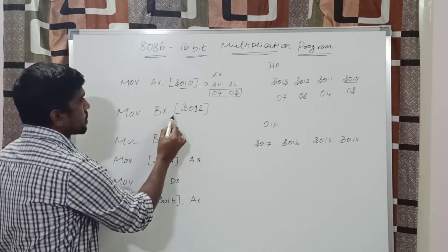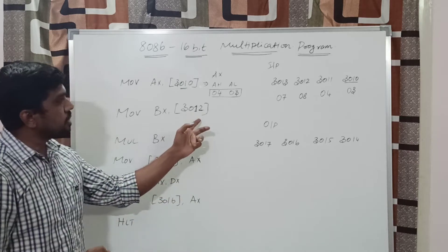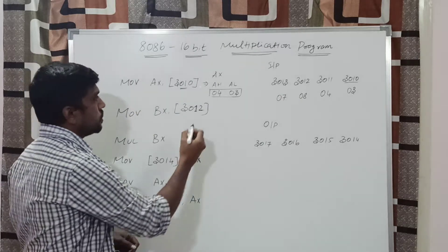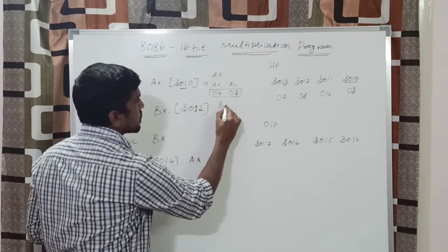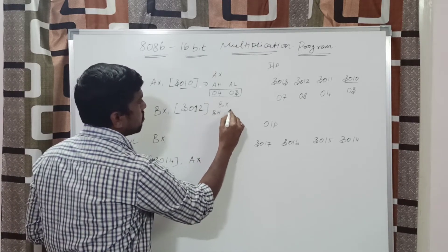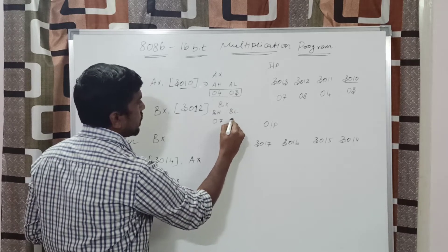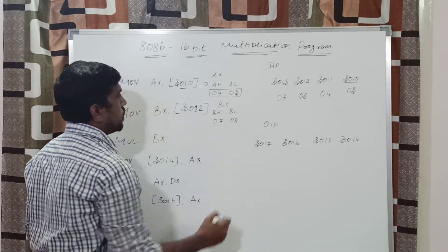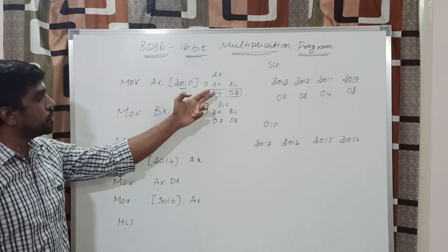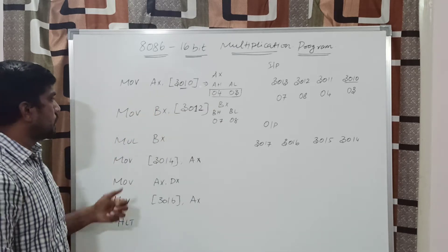The next instruction is MOV BX, 3012. You get the second 16-bit value from the memory location 3012. After execution of this instruction, BX is split into BH and BL, storing the data 07 and 08. The first two instructions declare the 16-bit values and store them into the AX register and BX register.